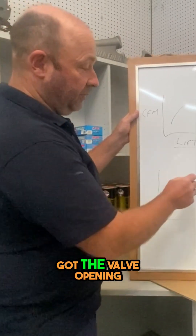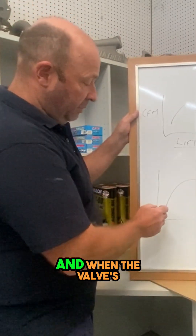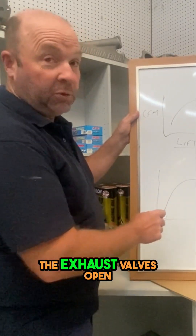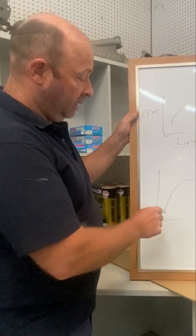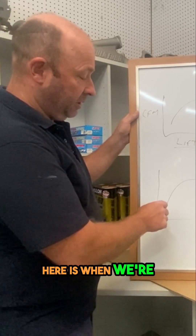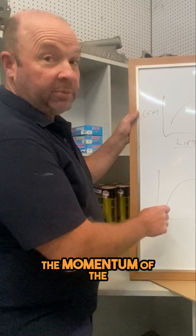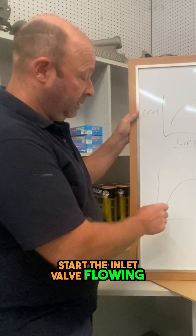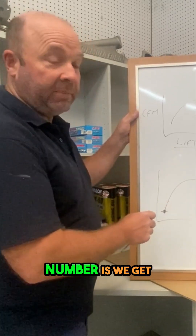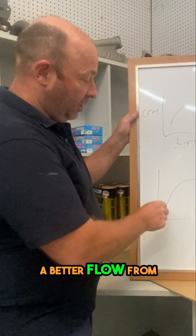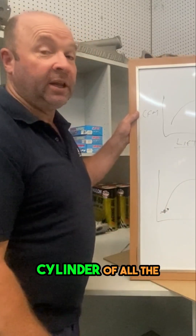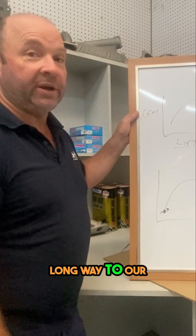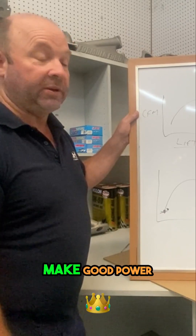It's symmetrical because we've got the valve opening and the valve closing. When the valve's opening down here, the piston's coming up and the exhaust valve's open. What we get here is the energy or the momentum of the exhaust gas flow starting the inlet valve flowing. With better low lift numbers, we get better flow from the inlet which helps flush the cylinder of all the burnt gases that have just happened during compression. And that goes a long way to our efficiency and whether or not we make good power.